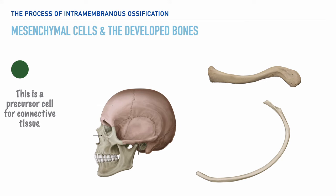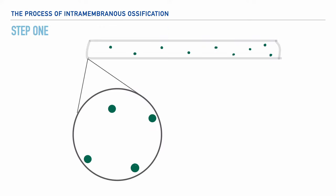It's through intramembranous ossification that we have the development of flat bones like those of the skull, the ribs, and the clavicle. Ultimately, this process begins with the embryonic skeleton, and here we're starting with the cartilage model.